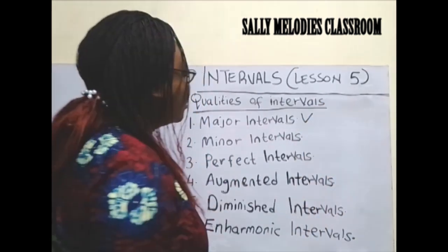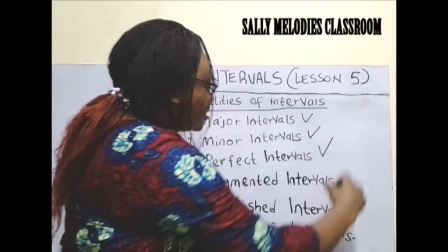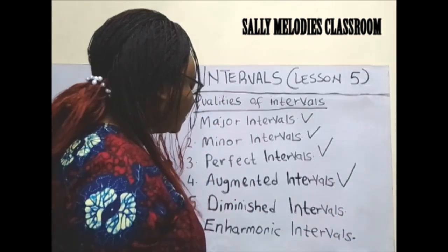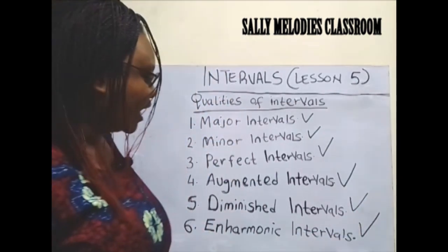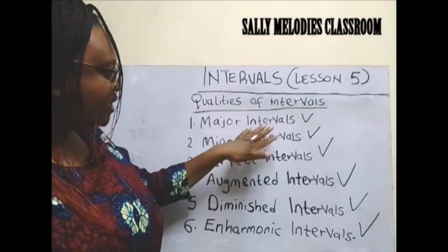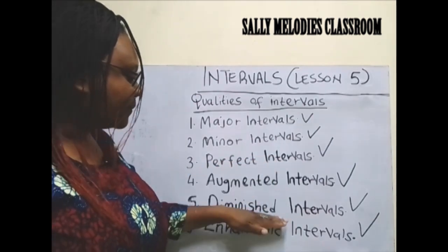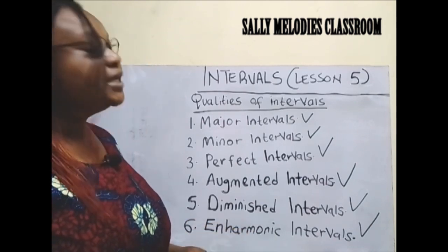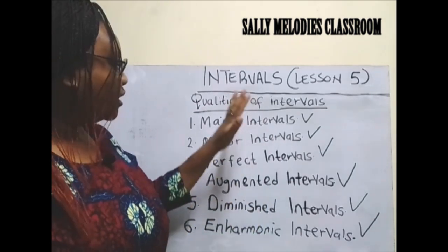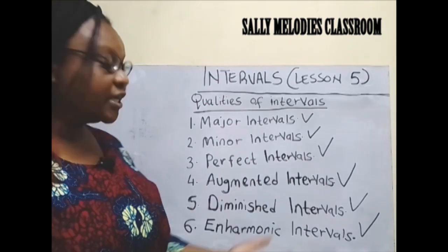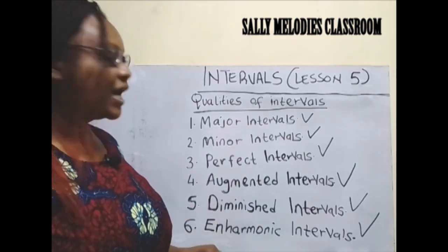We have major intervals, minor intervals, perfect intervals, augmented intervals, diminished intervals, and finally harmonic intervals. Those are six qualities of intervals. Each and every quality is going to be discussed in the next lessons, so here we have like six lessons, because we are going to be discussing each until we understand.